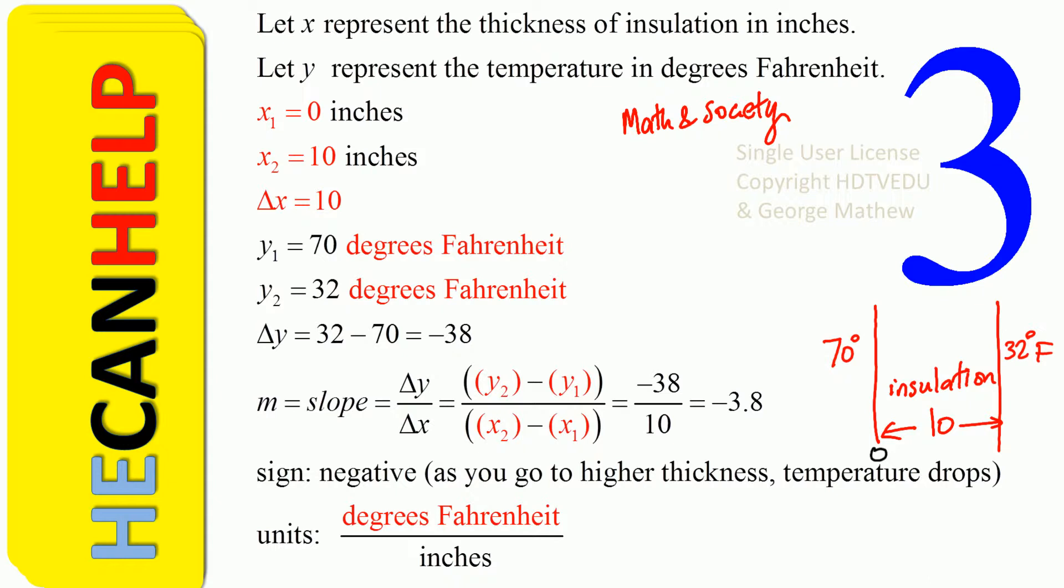x1 equals 0 inches. At 0 inches, what do we have? The temperature is 70 degrees Fahrenheit. At x equals 10, what do we have? The temperature is 32 degrees Fahrenheit.